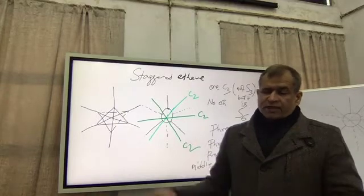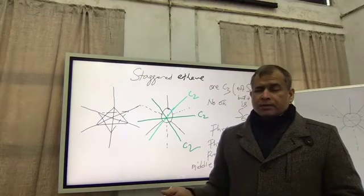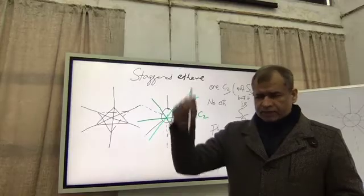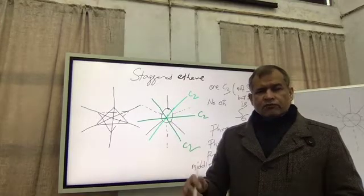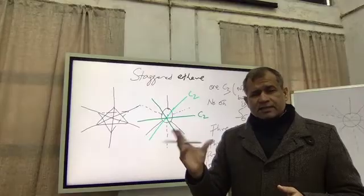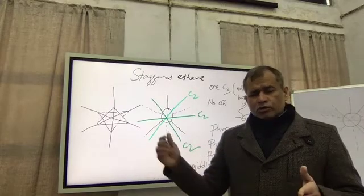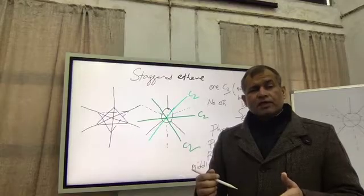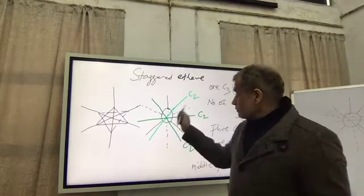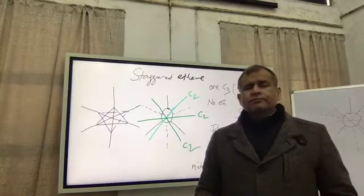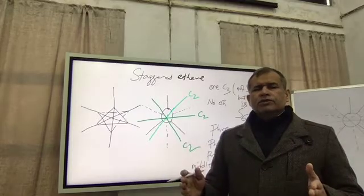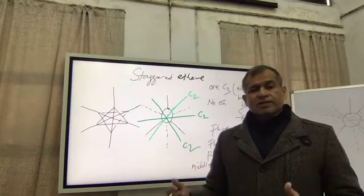But if you go to the staggered ferrocene, then you have C5 axis which is not S5, that will act as S10 axis. In the middle, you will also have here 5 C2 axes present the way you have in the staggered ethane. And of course, 5 sigma diagonal planes will also be present.